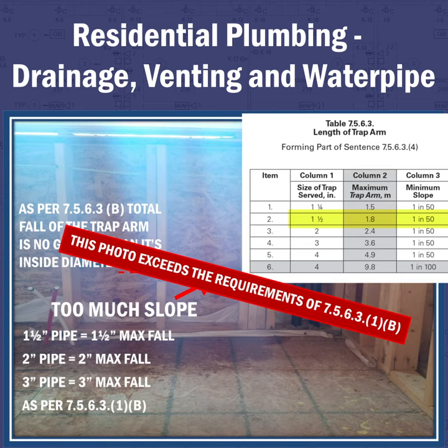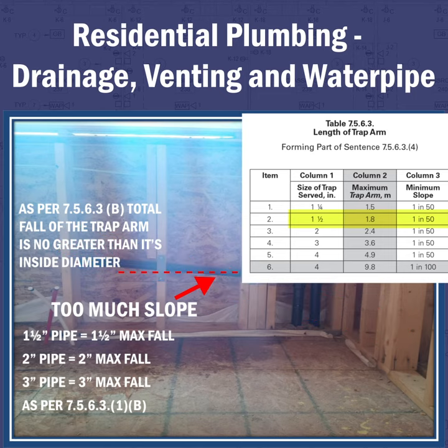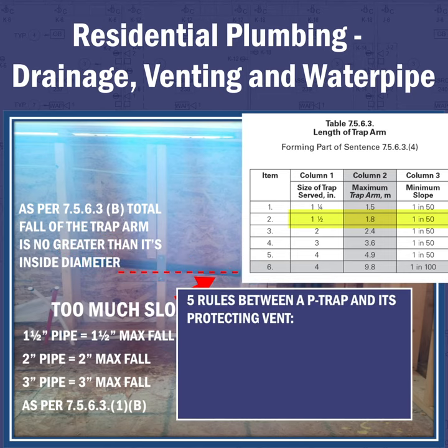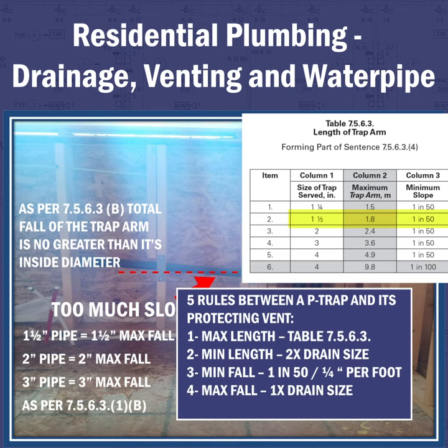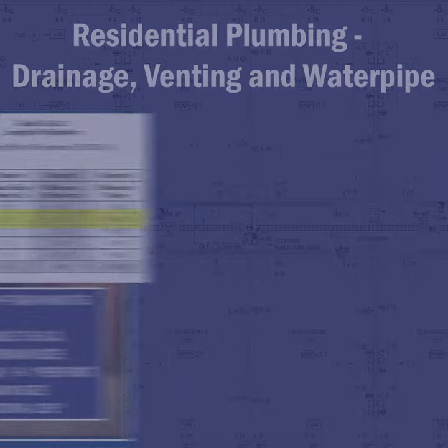There are five fixture waste pipe requirements between a P-trap and its protecting vent: 1. The maximum length. 2. The minimum length. 3. Minimum fall. 4. Maximum fall. 5. Change of direction.